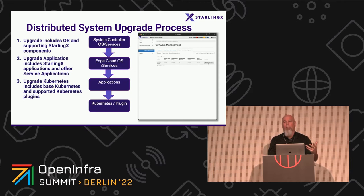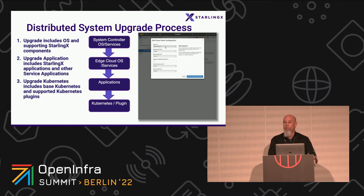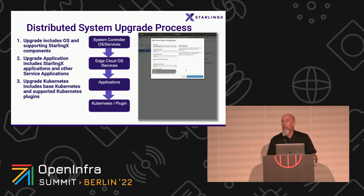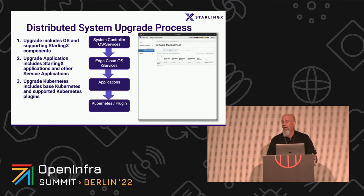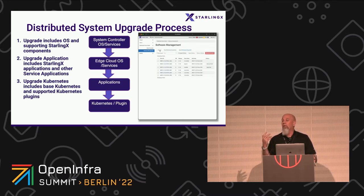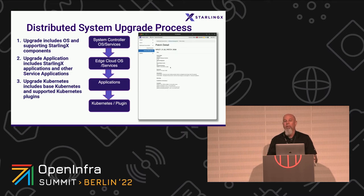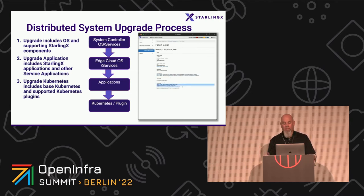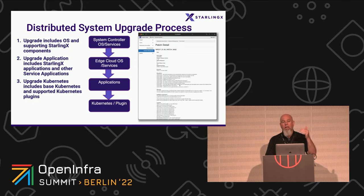After that, StarlingX prepares for upgrading Kubernetes. There are challenges because your workload may not be able to move from one Kubernetes version to another without application updates. So StarlingX updates the applications first — including StarlingX's own applications. Then Kubernetes and its plugins are upgraded. All of this is orchestrated from the system controller, which tells edge clouds to perform those upgrades, and they report success or failure back up.